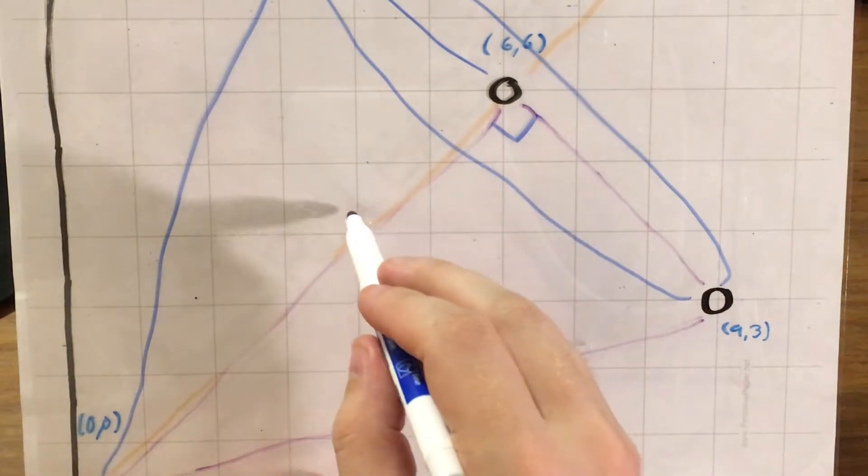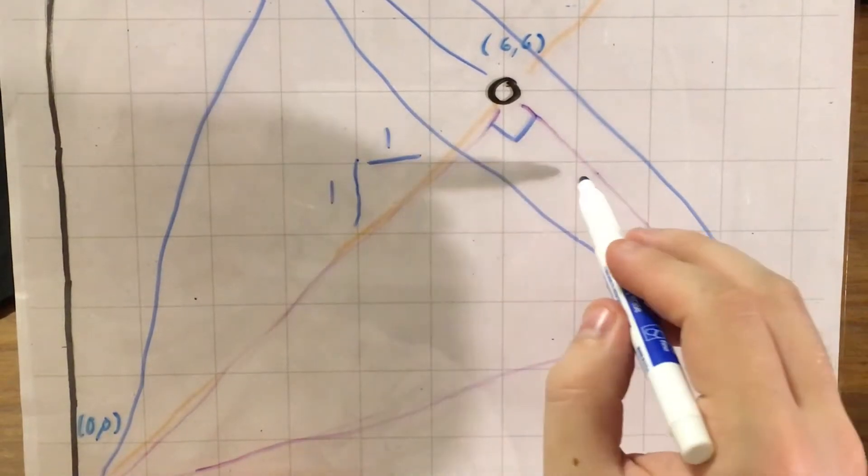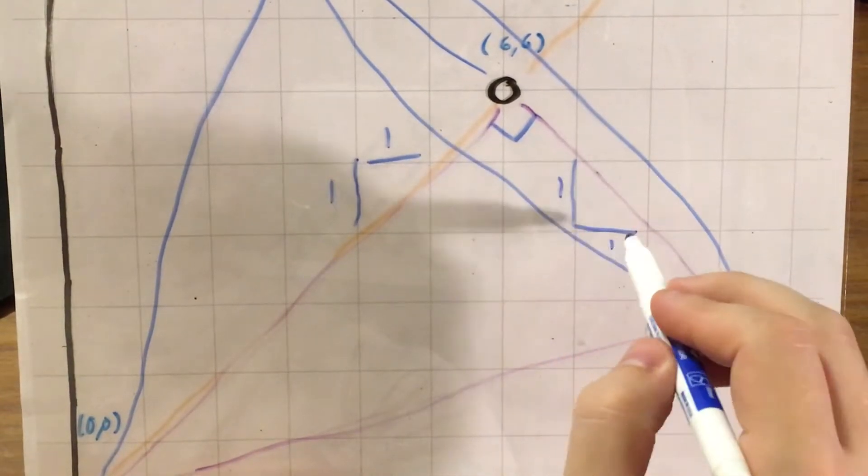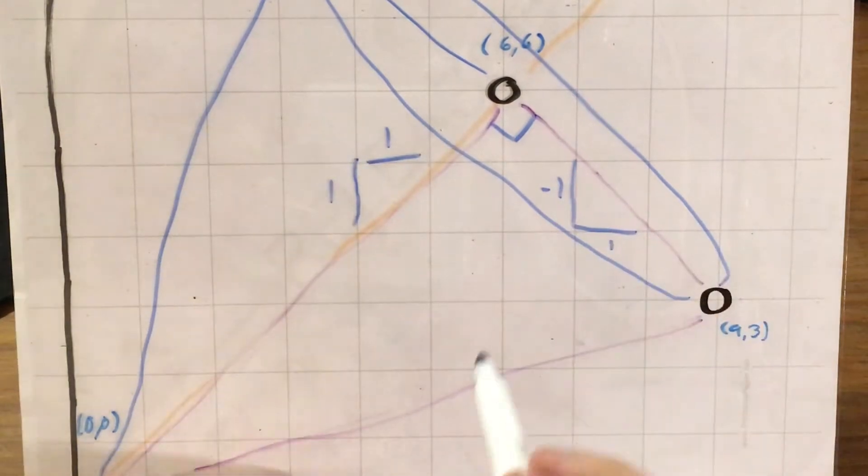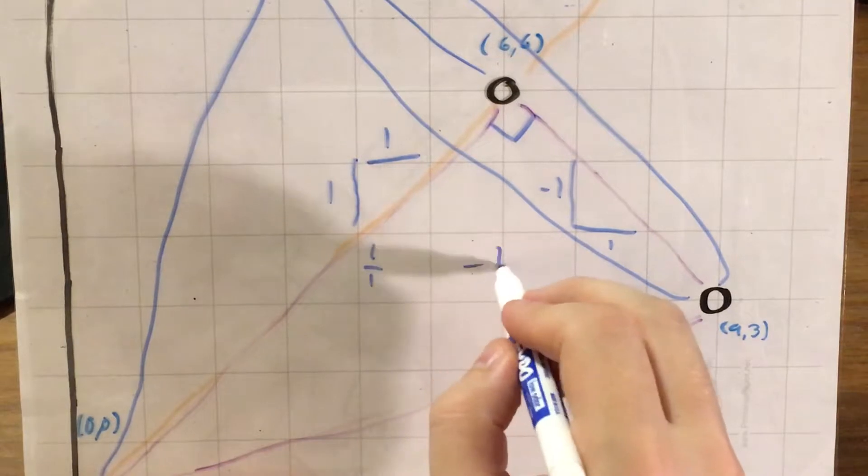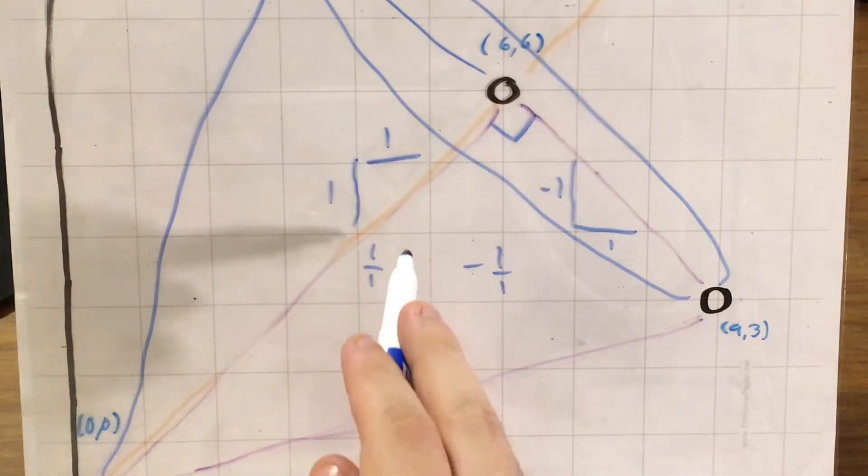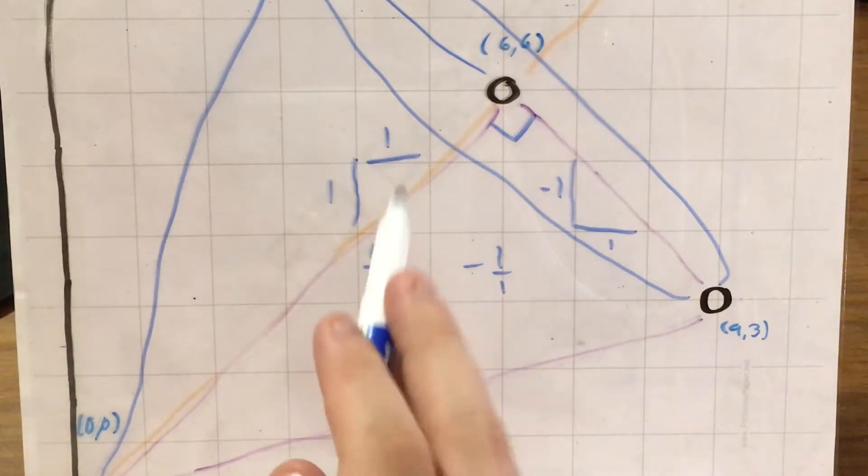Because this line representing our height, and this line representing the radius of the circle, since we took this and rotated it around, actually make a right angle. And I know this because their slopes are perpendicular. This line goes one up and one right. This line goes one down and one right. So the fractions that we would write these two slopes in, 1/1 and -1/1, are like we took each of these fractions, flipped them over and put a negative sign on it to get the other one. So that's how I know that they're perpendicular and that they make a right angle.